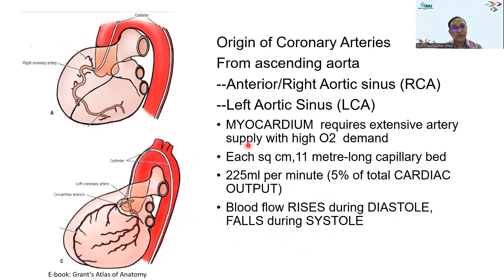You also need to remember there are three layers on the surface of the heart: epicardium, myocardium, and endocardium. The myocardium is very thick — it is the main pump of the heart and requires extensive arterial supply and a high oxygen demand. Without oxygen, the myocardium cannot work. Each square centimeter is perfused by almost 11 meters of capillary bed, and about 5% of total cardiac output (approximately 5.5 to 6 liters) is perfused into the myocardium.